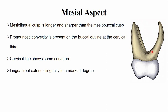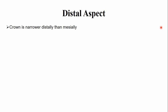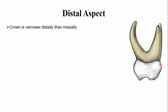After the division from the root trunk, the lingual root initially extends prominently in a lingual direction, then curves sharply in a buccal direction above the middle third. From the distal aspect, the crown is narrow — the buccolingual width of the crown is narrow on the distal side.